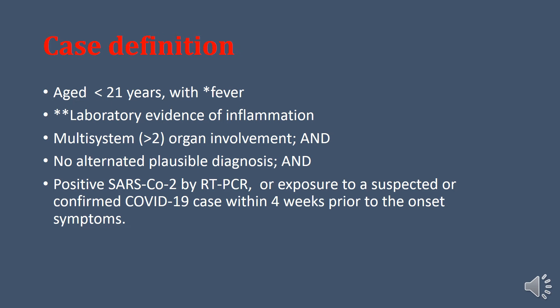The CDC case definition for MIS-C includes: age less than 21 years, fever, and laboratory evidence of inflammation, along with multi-system organ involvement of more than two systems — which could be the lungs and heart, skin and heart, or intestine. Notably, 80% of gastrointestinal involvement has been observed in children in one study.